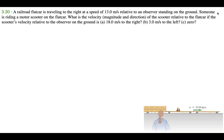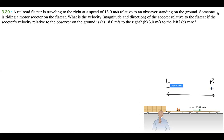A railroad flat car is traveling to the right at a speed of 13.0 meters per second relative to an observer standing on the ground. Someone is riding a motor scooter on the flat car. What is the velocity — magnitude and direction — of the scooter relative to the flat car if the scooter's velocity relative to the observer on the ground is: (a) 18.0 m/s to the right, (b) 3.0 m/s to the left, and (c) 0. I'm going to set up right as positive and left as negative.